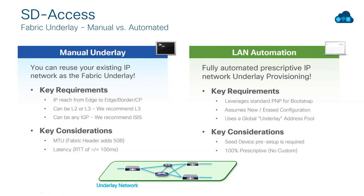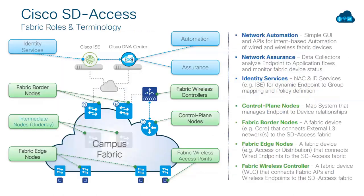ISIS is being used by many fabrics and technologies because it is protocol independent, able to carry different protocols, and can start working independently of IP addressing — making it ideal for automated tasks. Devices can discover each other and establish communication, which helps the controller collect information about them.